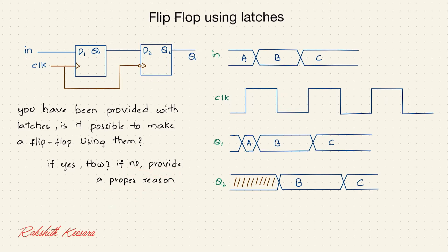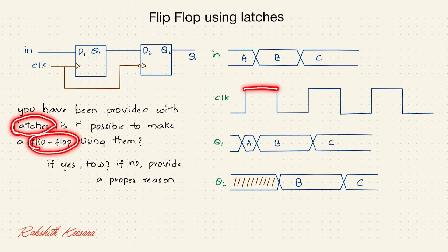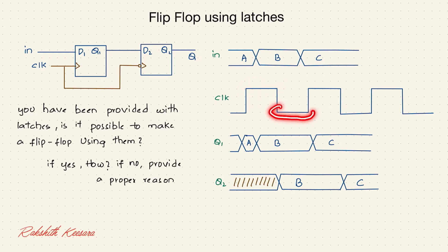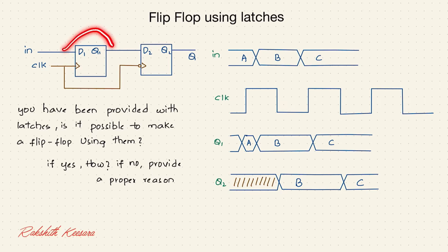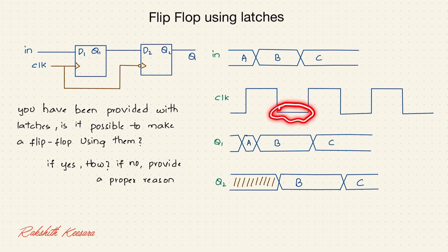So let's see the answer, but first you need to understand the difference between a latch and a flip-flop. Generally, a latch is level-triggered while a flip-flop is edge-triggered. Whenever there is a positive level or negative level, the latch will propagate the input to the output. If it is propagating at positive level it is called a positive level-sensitive latch; if at negative level, it is called a negative level-sensitive latch.